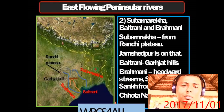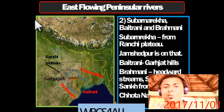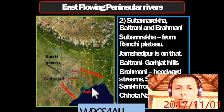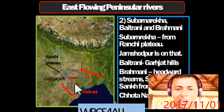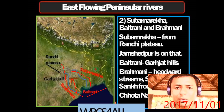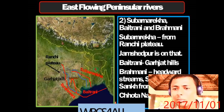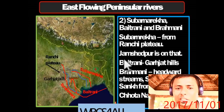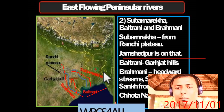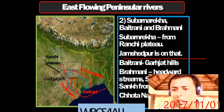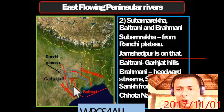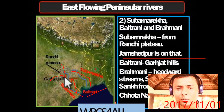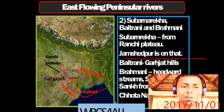Maithan Dam is located on the Barakar River at Maithan, 48 km from Dhanbad in Jharkhand. Now moving to the east-flowing rivers: Subarnarekha, Baitarani, and Brahmani. Subarnarekha originates from the Ranchi Plateau — Jamshedpur is located on Subarnarekha. Baitarani originates from the Garjat Hills. Brahmani is formed by the headward streams South Koel and Sankh, both from Chota Nagpur Plateau.